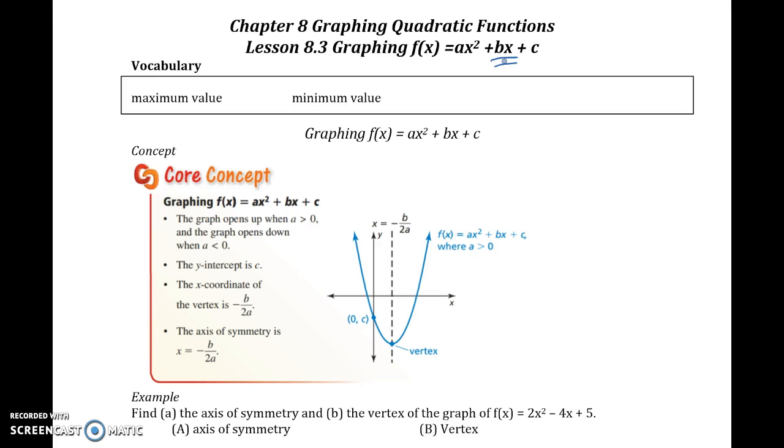Well, now we can actually find the axis of symmetry and the vertex using a formula. So the x-coordinate of the vertex is going to be what we call negative b over 2a, which also happens to be the axis of symmetry. And to find the actual vertex, all you have to do is plug in that negative b over 2a. So the vertex is actually going to be the point negative b over 2a, f of negative b over 2a. And if you don't understand that function notation very well, don't worry. We're going to do an example of this in a moment. You're basically just plugging in x to find the y.